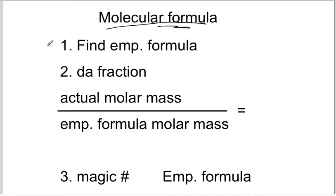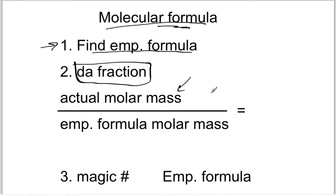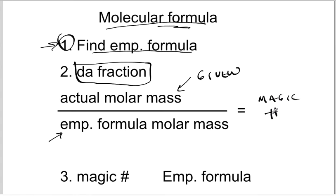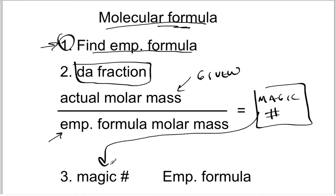When you go to calculate, the first step is you have to find the empirical formula. The second step is we're going to use what I call the fraction, which is the actual molar mass — given to you in the problem — divided by the empirical formula molar mass, which you found in step one. Divide the two and you get what I call the magic number. We multiply the magic number times the empirical formula and we get the molecular formula.